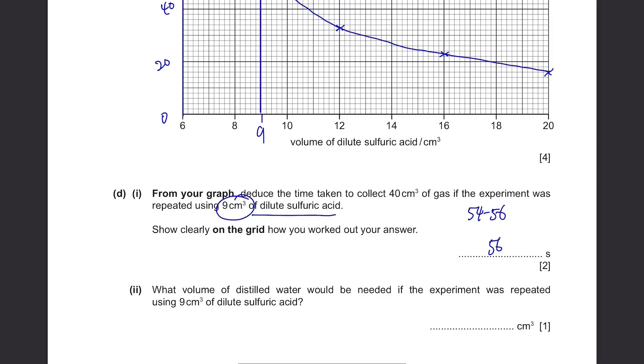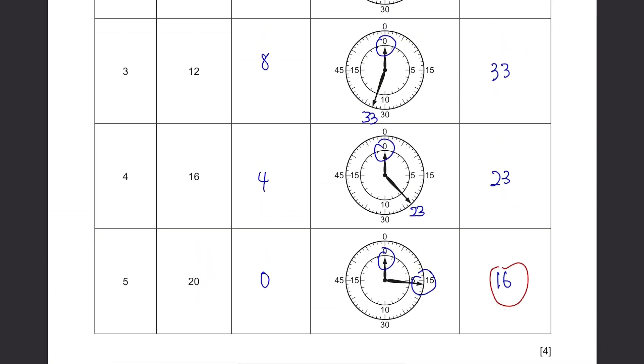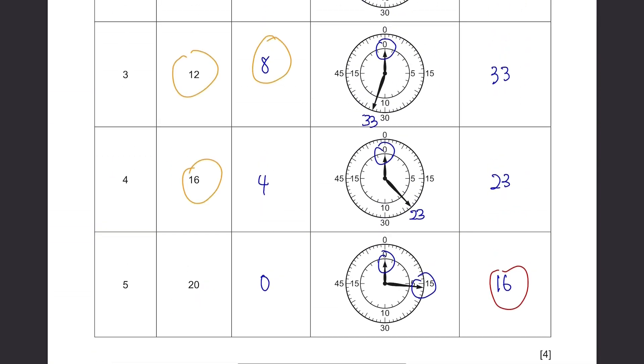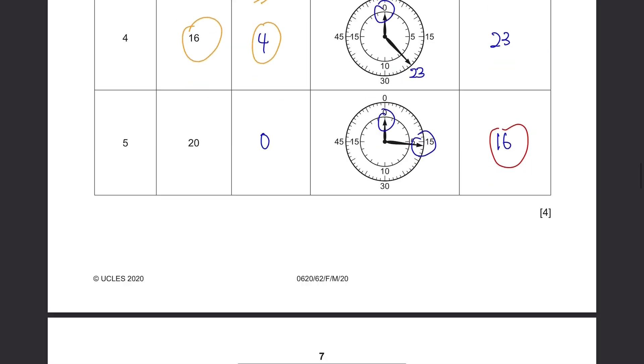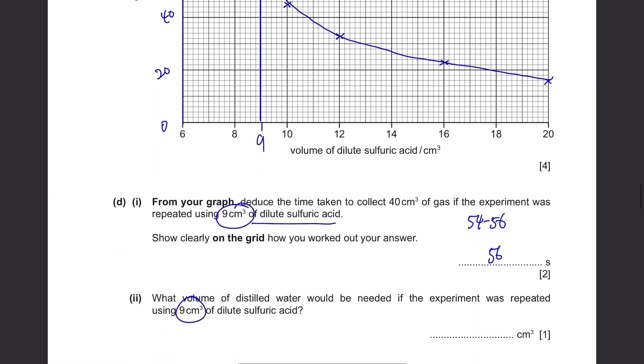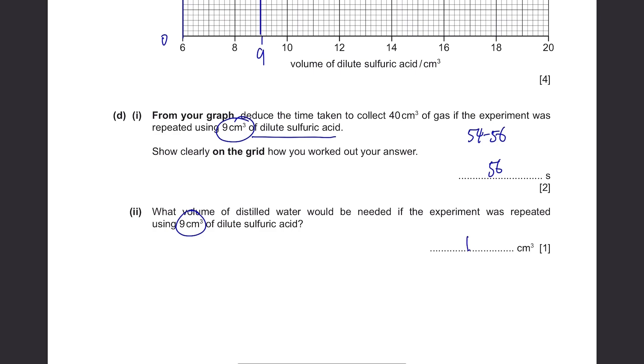What volume of distilled water would be needed if the experiment was repeated using 9 cm cubed of dilute sulfuric acid? Have you noticed something? If you add up the volume of distilled water and sulfuric acid, everything just adds up to 20. So if we are adding 9 cm cubed of sulfuric acid, we will need 11 cm cubed of distilled water.